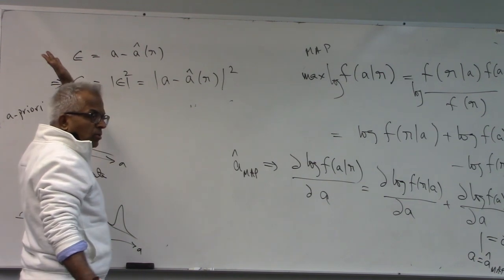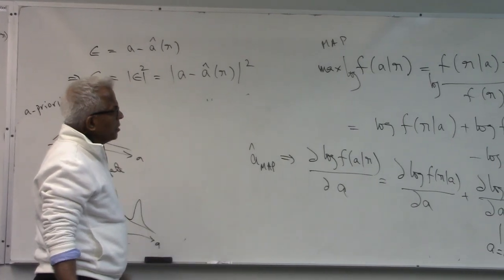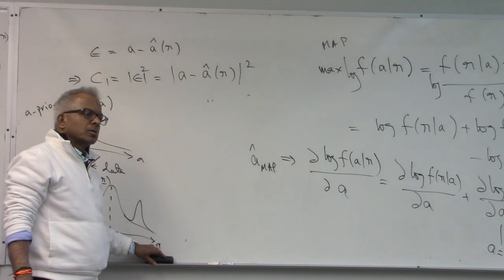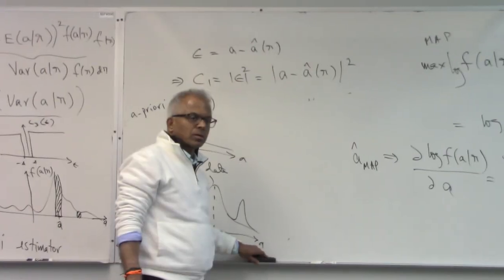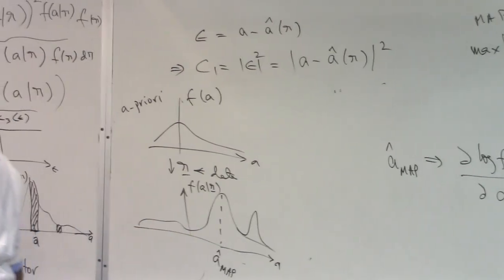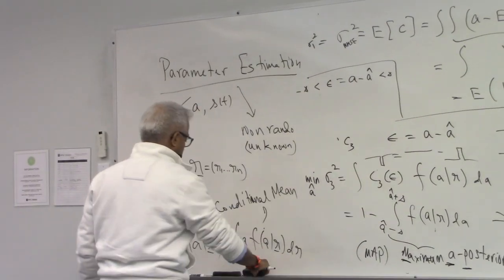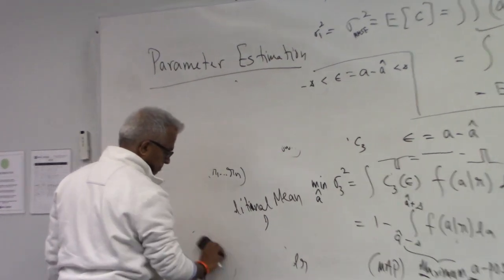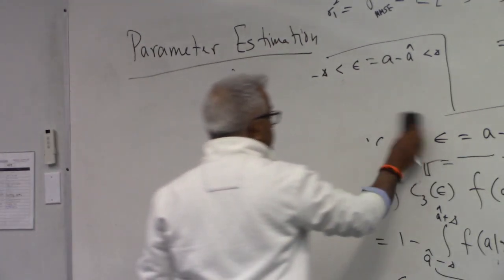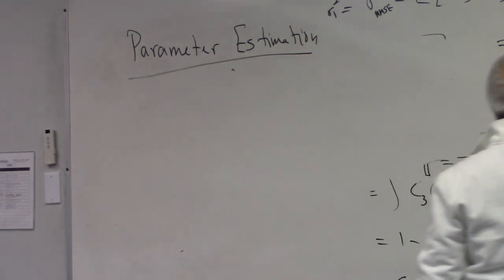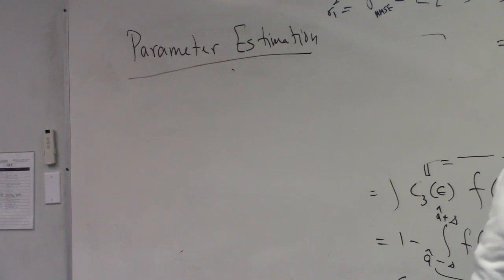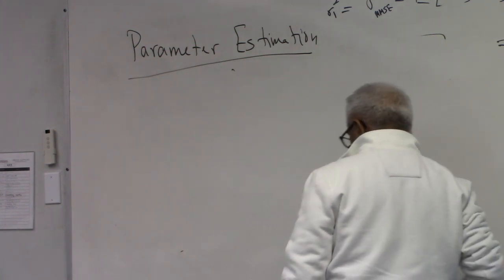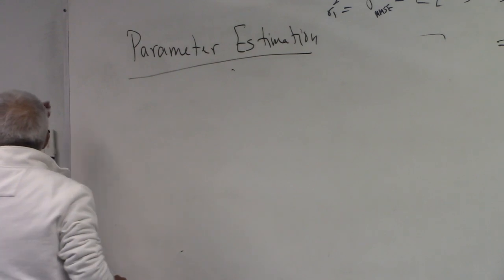So you put that value into the cost function to compute the minimum value. To summarize, I have given you three estimation procedures for random parameters: MMSE (conditional mean), absolute value cost (conditional median), and MAP (peak of posterior density).